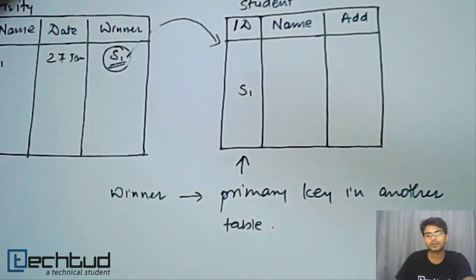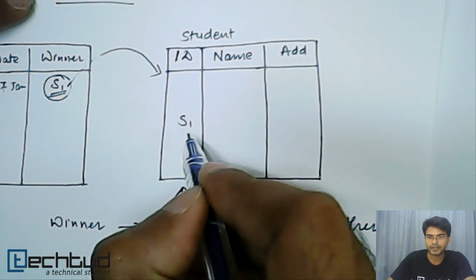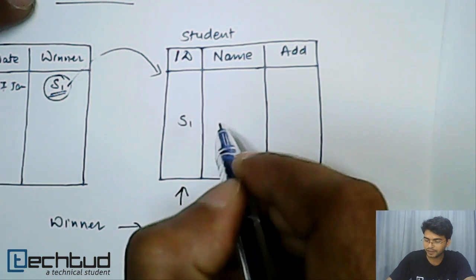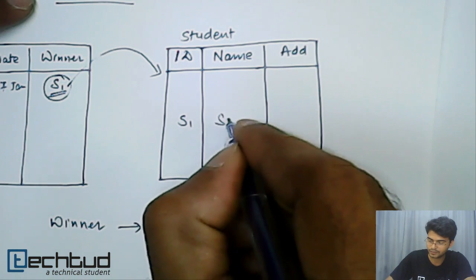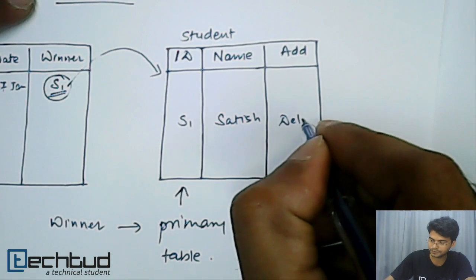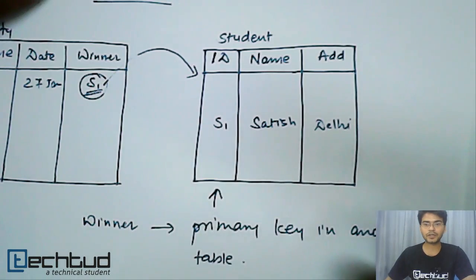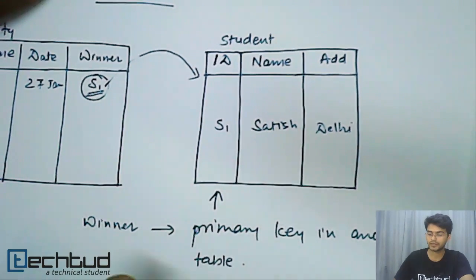This has to be a primary key. Now let's say S1 we got, then using this S1 we can find the name is, let's say Satish, and address is from let's say Delhi. So now we can identify what are the details of this particular student.